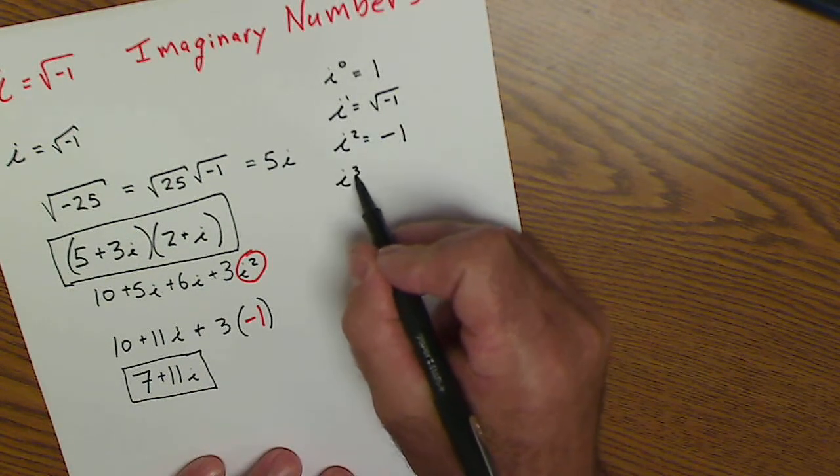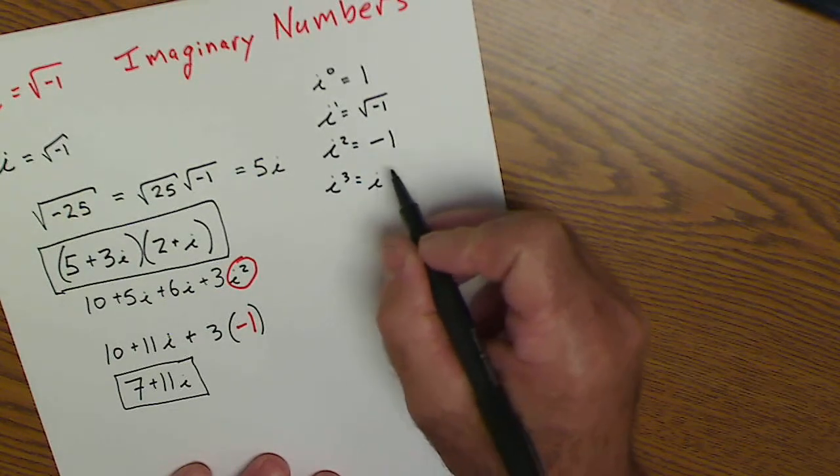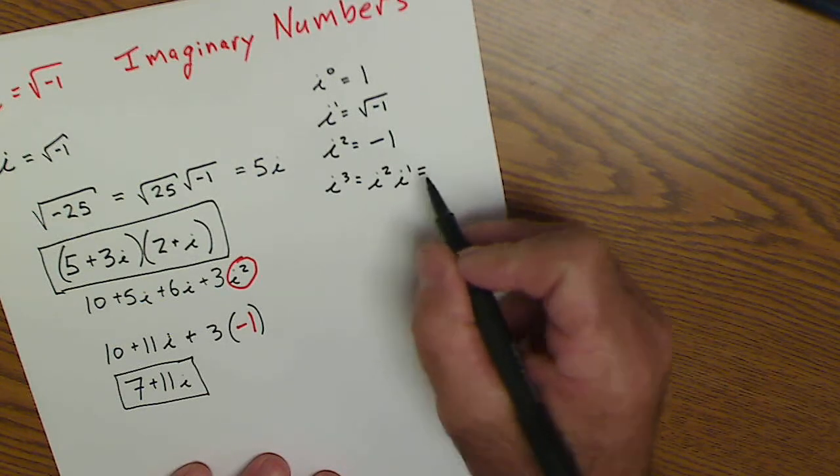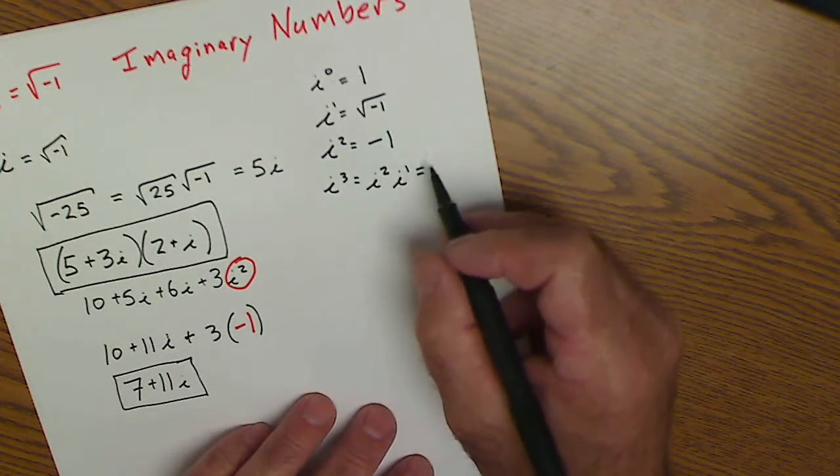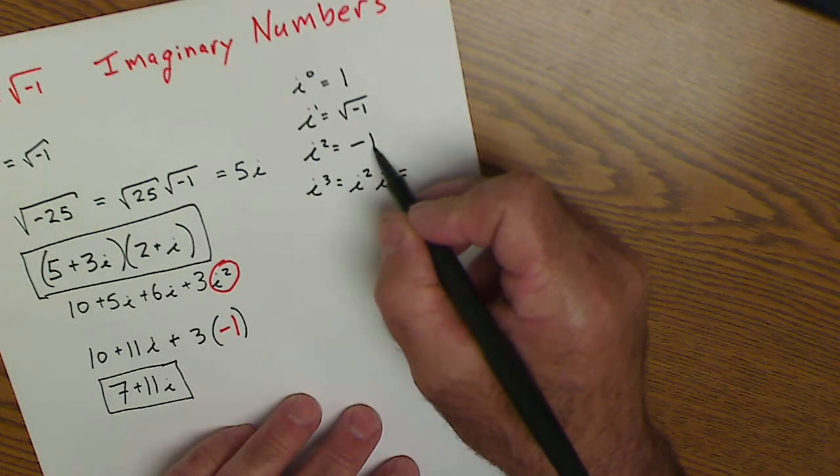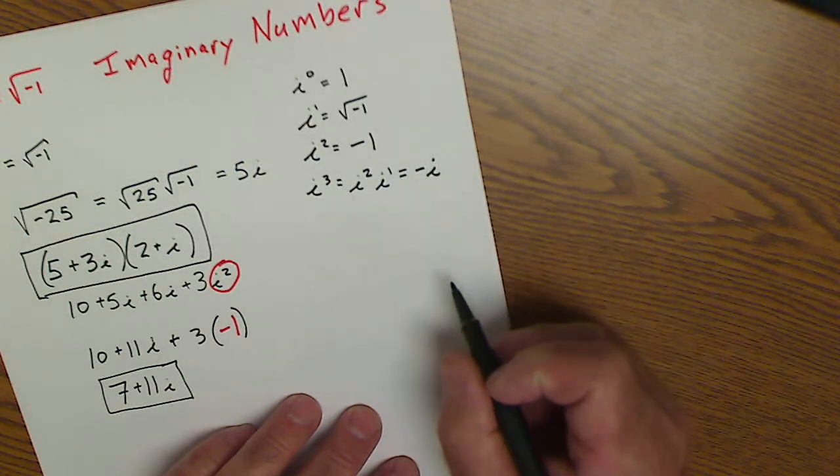So i to the third would be equal to i squared times i to the first. So that would be equal to negative 1 times i. So this is negative i.